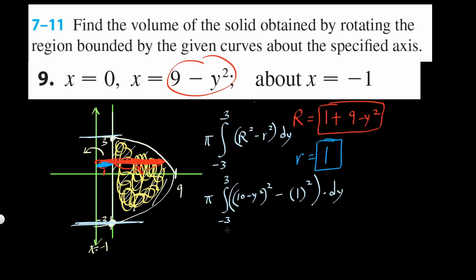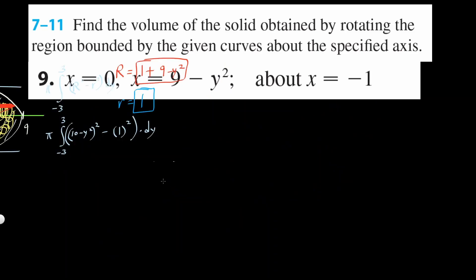Because we're going from negative 3 all the way up to positive 3. So it's going to be pi times negative 3 to 3. Let's foil it inside. So it's 100 minus 20y squared plus y to the fourth minus 1. Everything times dy.